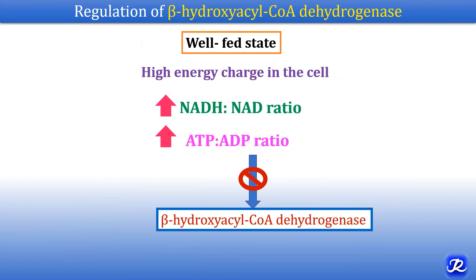Regulation of beta-hydroxyacyl-CoA dehydrogenase: in the well-fed condition there is a high energy charge in the cell — increased NADH/NAD ratio and increased ATP/ADP ratio — and this inhibits beta-hydroxyacyl-CoA dehydrogenase, reducing beta oxidation in the well-fed state.